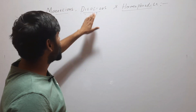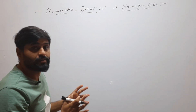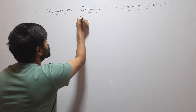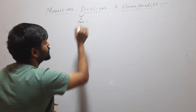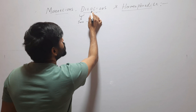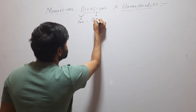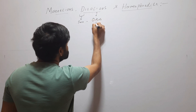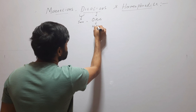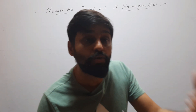We will start from Dioecious. This word is taken from Greek. 'Di' means two. 'Oikos' — that word is taken from Oikos, which means house. So it means two different houses.